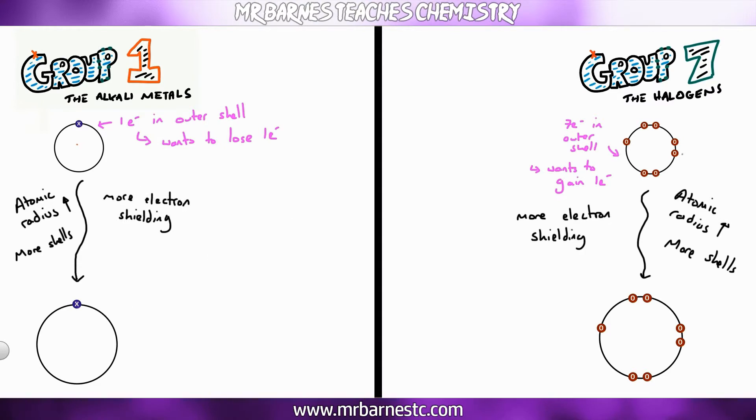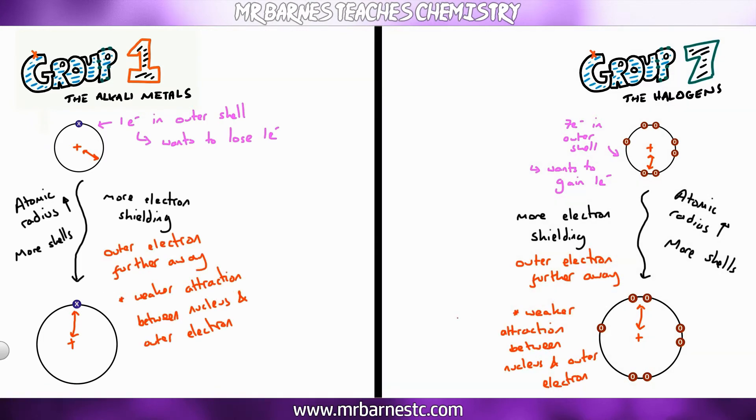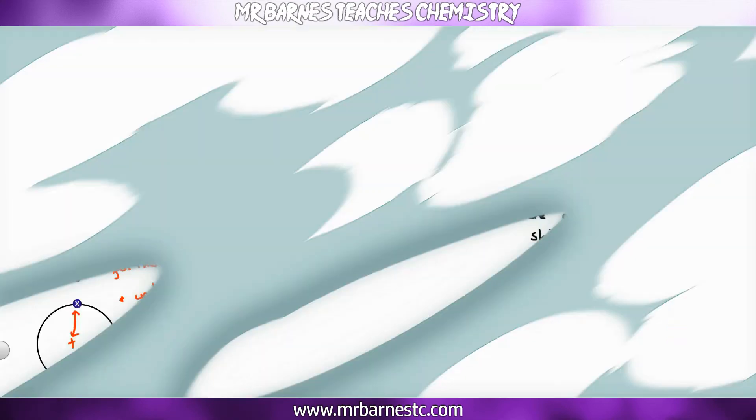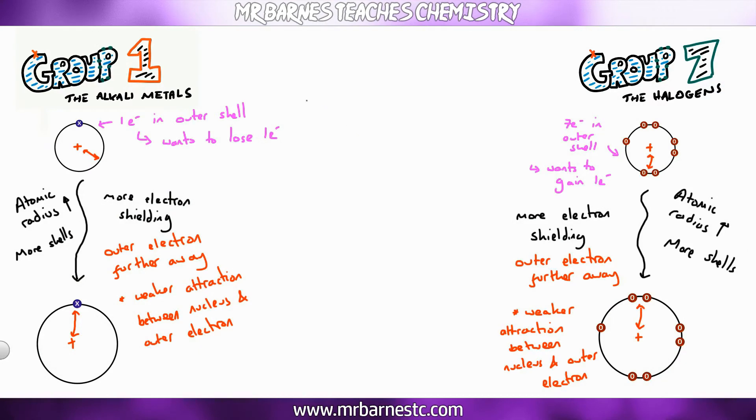Now you should remember the nucleus is positive and there's a force of attraction between our positive nucleus and our negative electron. But as the outer electron gets further away that force of attraction becomes weaker. So that explanation is exactly the same for group 1 and group 7.